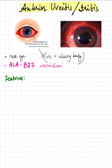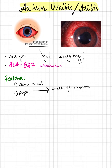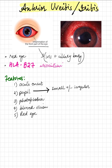Symptomatology of anterior uveitis involves an acute onset. The patient has ocular discomfort and pain that progresses with use of the eye. The pupil size is small and may be irregular due to sphincter muscle contraction. Patients have intense photophobia, blurred vision, redness, and increased lacrimation. Ciliary flush can also be seen — a ring of red halo spreading outwards.